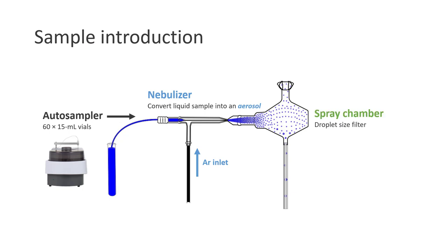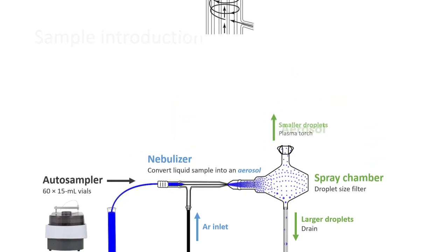Then we have a spray chamber, which serves as a droplet size filter, where the larger droplets will be removed and drained, while the smaller droplets will be carried into the plasma torch.